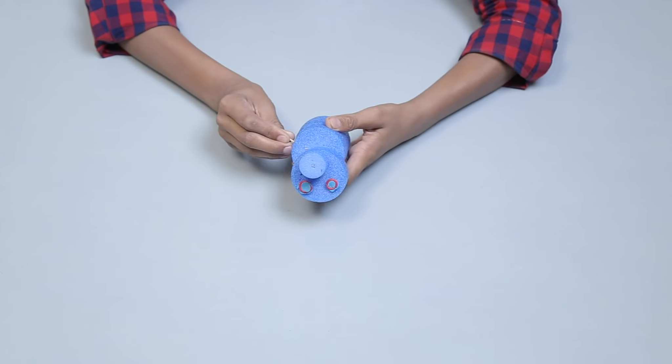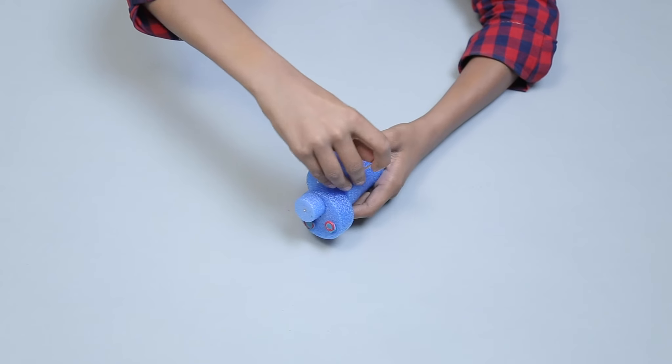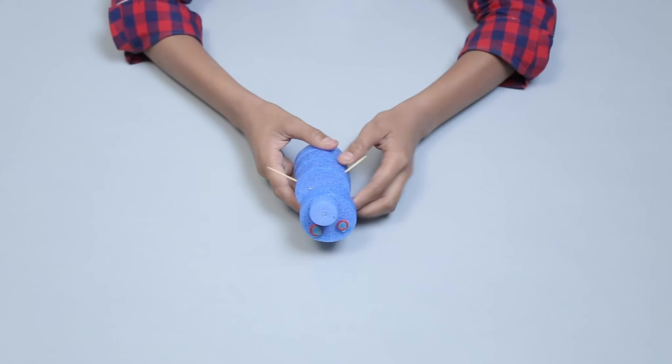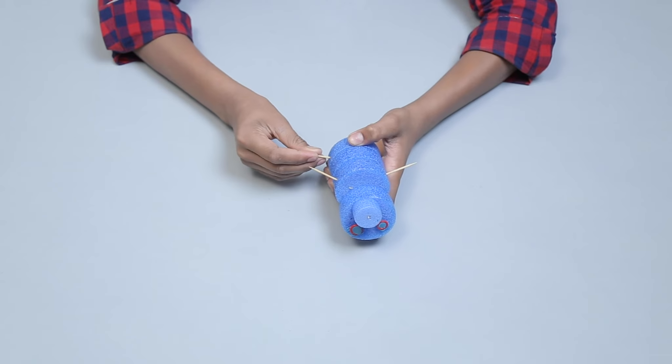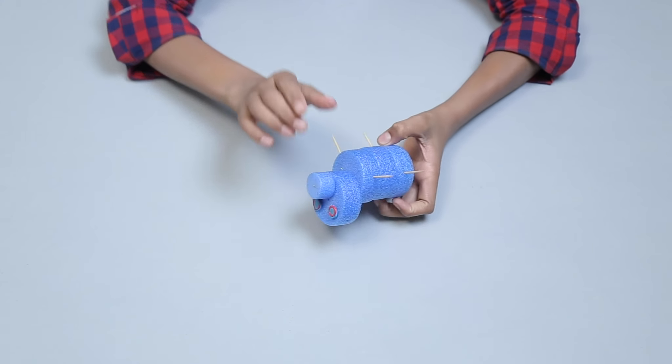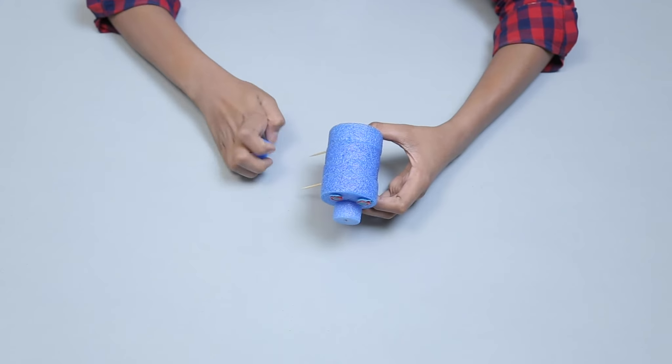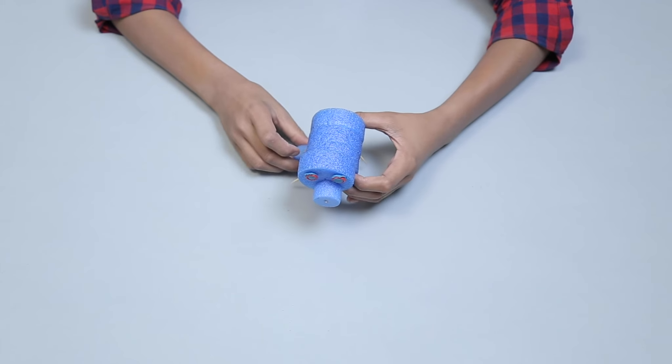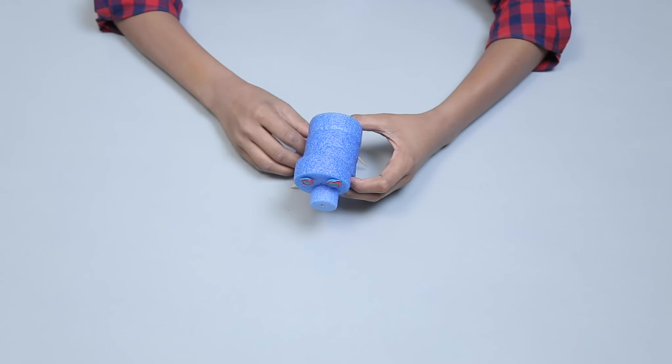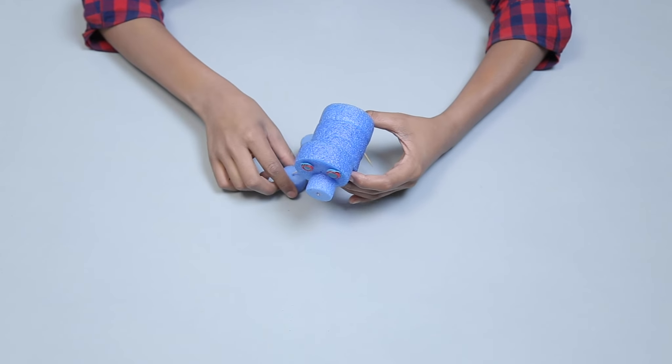Now attach four toothpicks on the bottom of the big foam cylinder to make four legs. Now attach small foam wheels to the toothpicks as feet of a dragon.